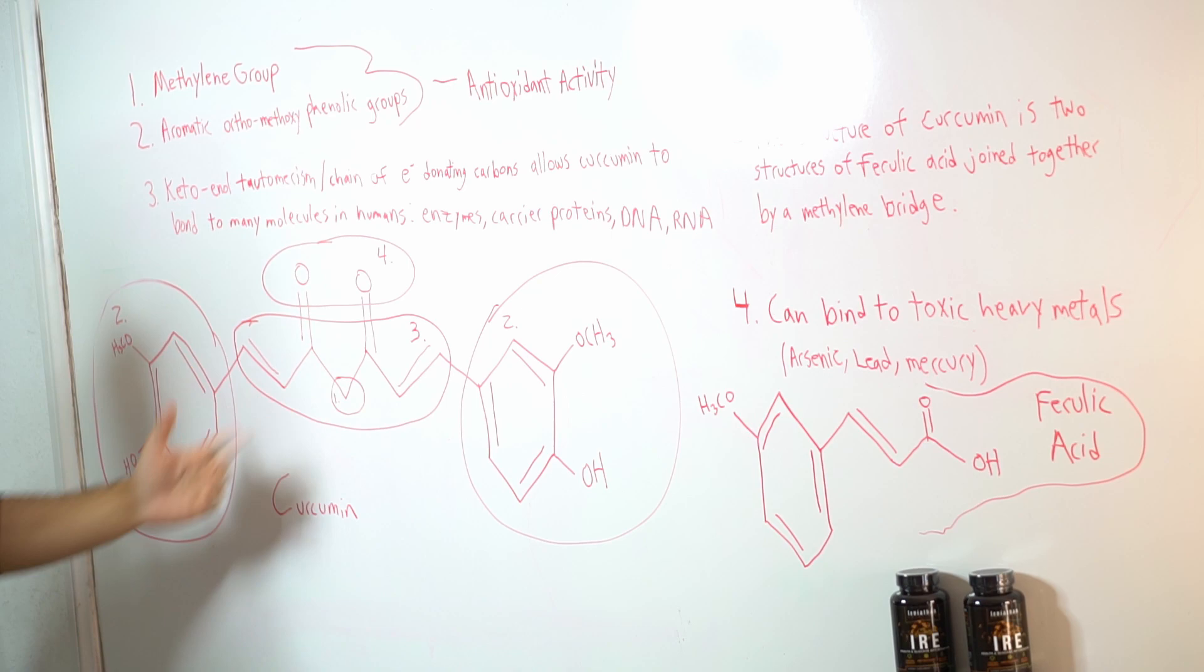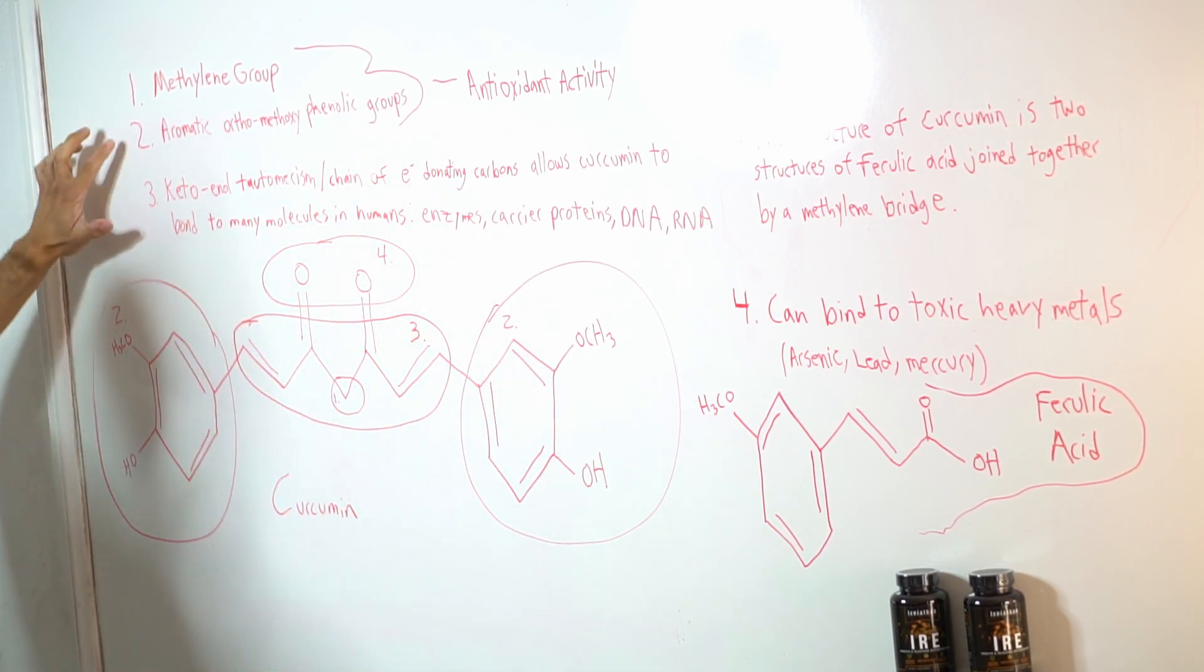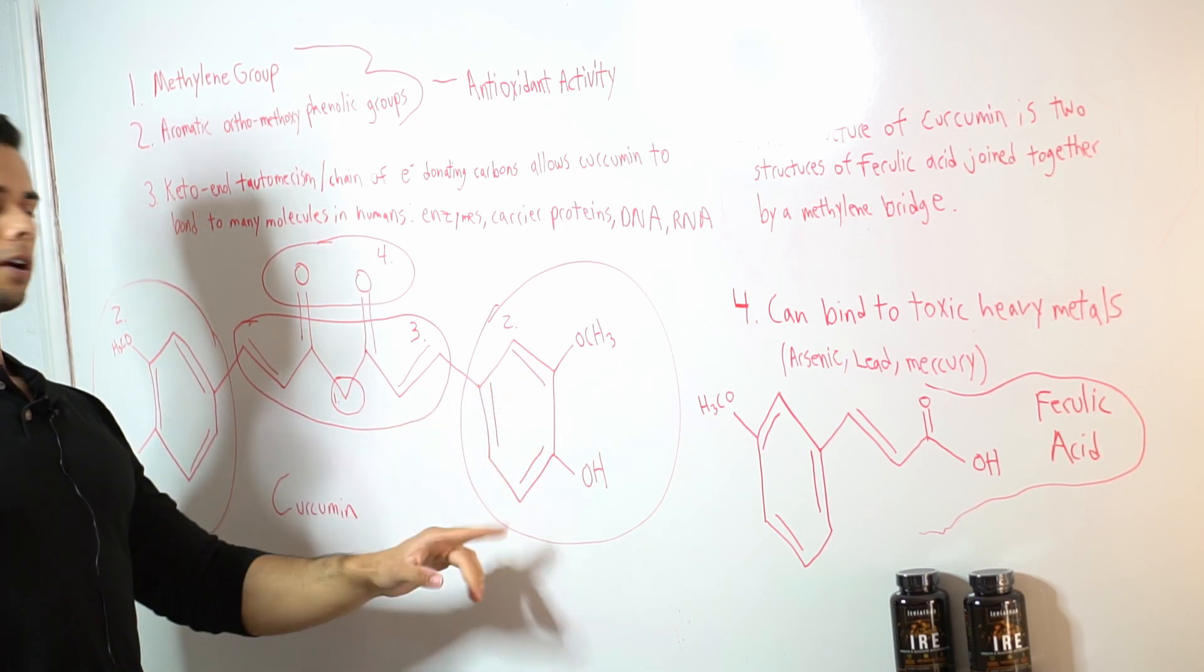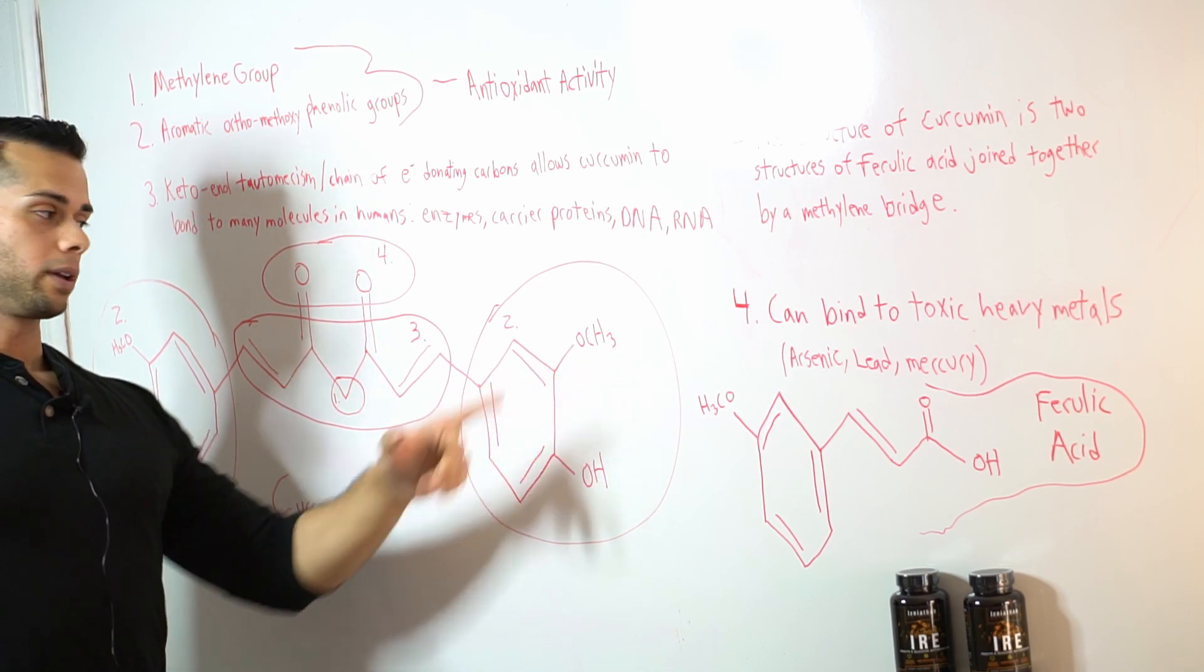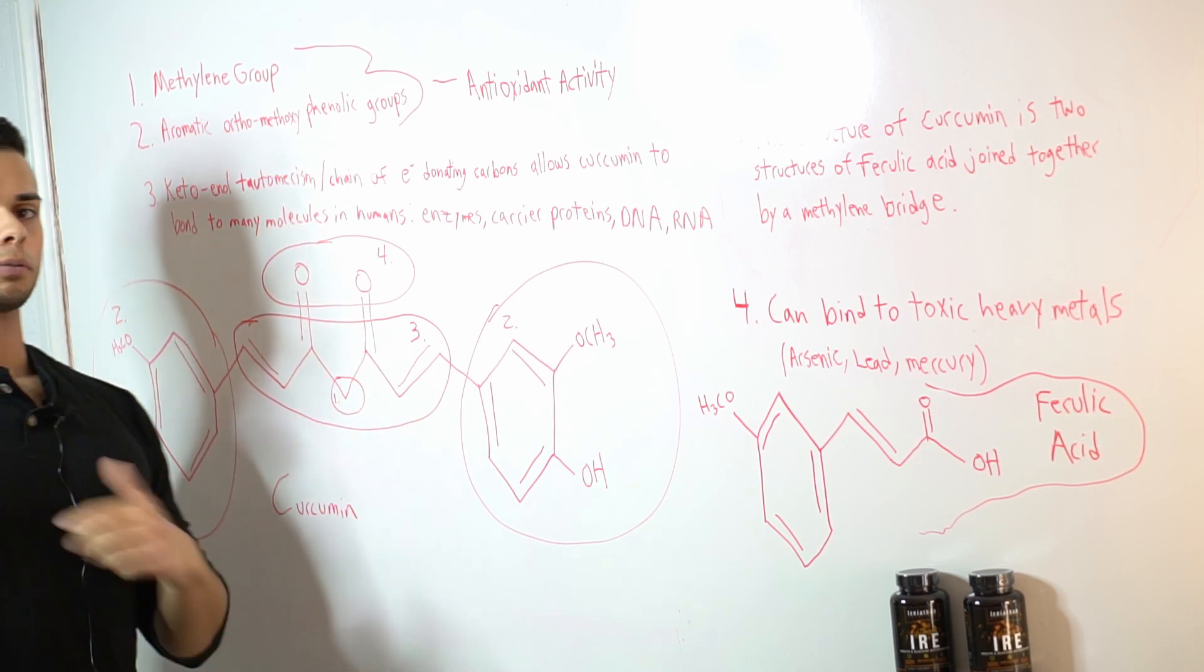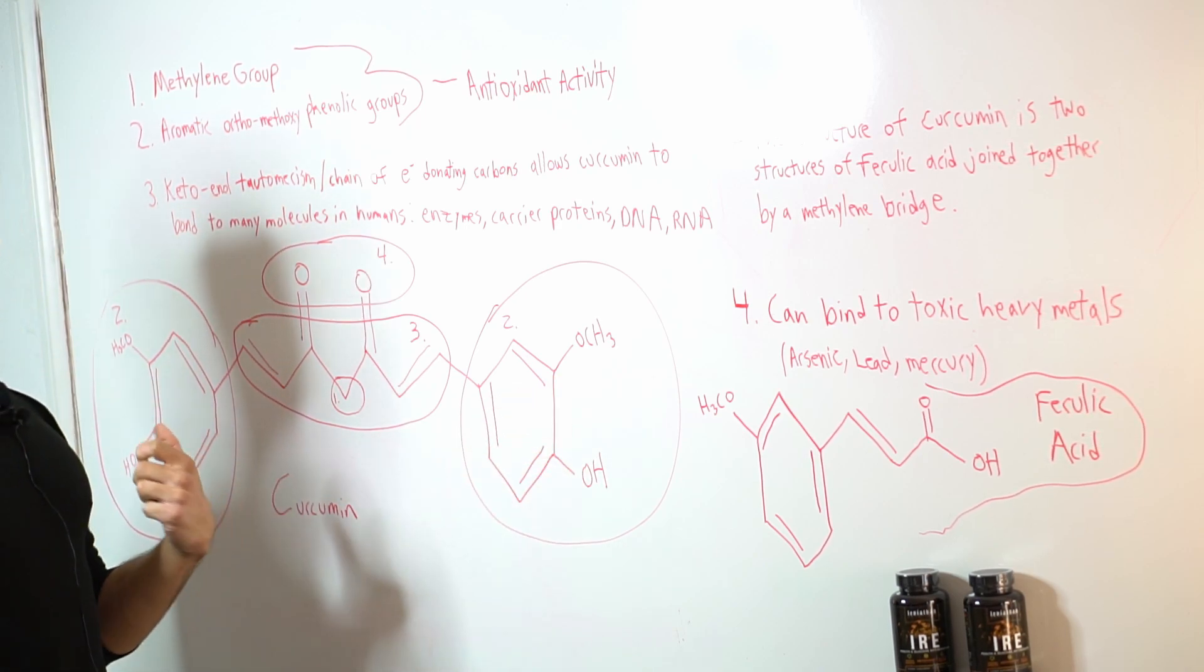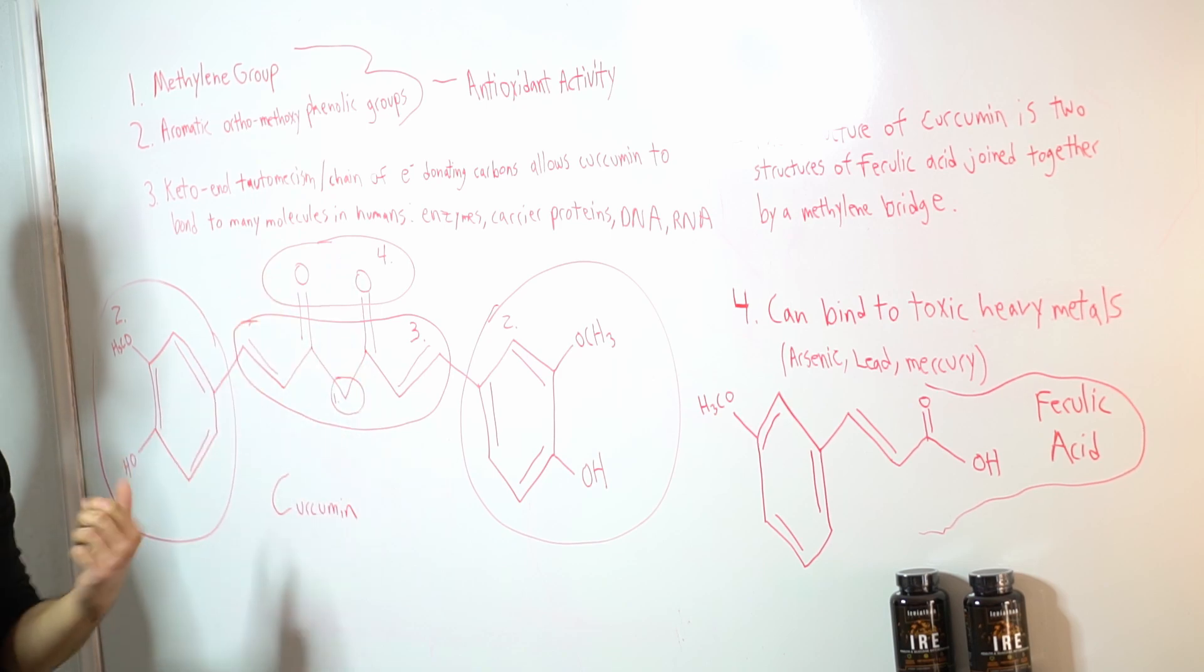Okay so we have the methylene bridge and then another important part of the curcumin structure are these parts right here which I've labeled as two and you can see here that number two is known as these aromatic orthomethoxy phenolic groups. There might be a mouthful to pronounce but basically a phenol group is this ring, this aromatic ring here with this OH group and methoxy refers to this OCH3 that we have here and ortho is simply referring to the distance between them. In organic chemistry ortho means that it's next to them so these are in an ortho arrangement thus the name orthomethoxy phenolic groups.